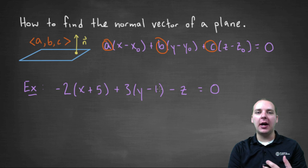So can we look at this and extract what a vector normal to our plane would be? Hopefully we can. We'll call it vector n. This will be the vector negative two, comma three, comma negative one.